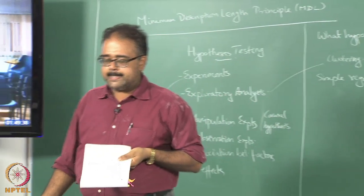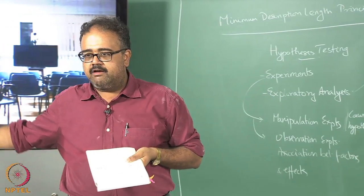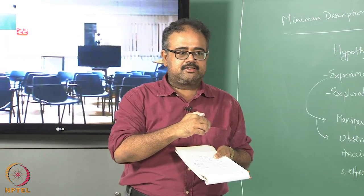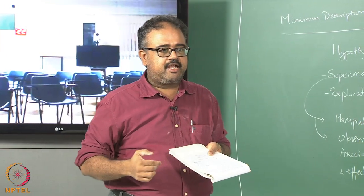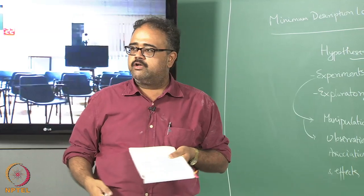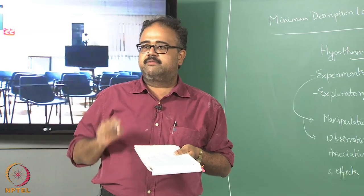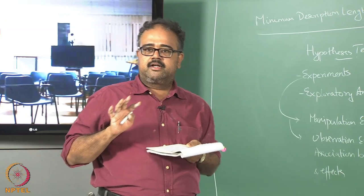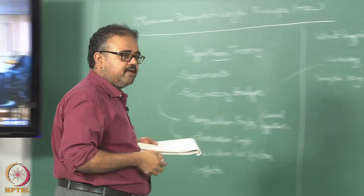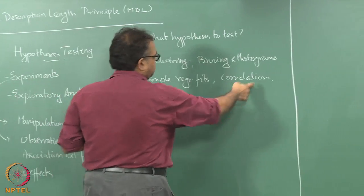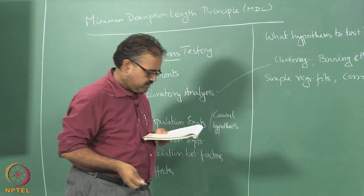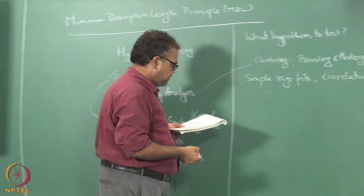We already talked about correlation analysis — it is useful for throwing away features. If two features are highly correlated you should throw one out, otherwise it leads to numerical instability in many algorithms. Apart from that, you can use correlation analysis to figure out what kinds of questions to ask as well.